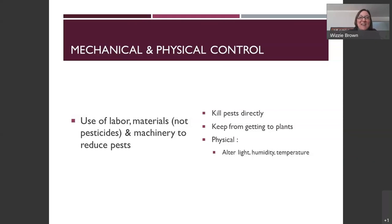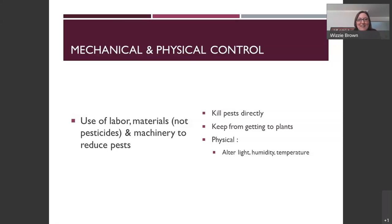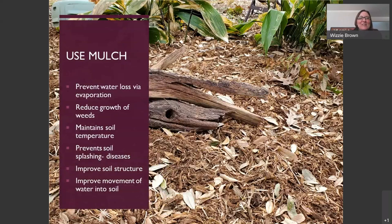Mechanical and physical control is the next category — this includes all the gadgety tools used to manage insects, including a hammer, your hand, a fly swatter, or a shoe. Mulch is one example — it helps prevent water loss through evaporation, reduces weed growth, maintains soil temperature, prevents fungal spores from splashing up onto plants, and improves soil structure to allow water and fertilizer to reach plant roots.